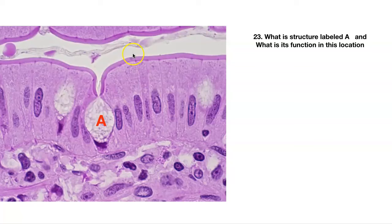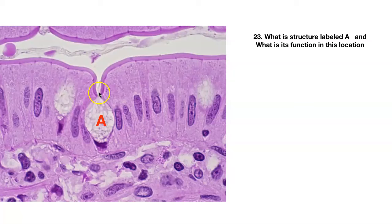Number twenty-three — what is structure labeled A? This is a goblet cell. What kind of epithelium is this? Simple columnar. You can actually see the microvilli edging up here, and here's your lumen. What's the function of goblet cells here? They're making mucus — probably in the small intestines. It's partly to lube the tube: there's food being digested and absorbed, so the mucus keeps food moving down the tube, and it also provides a mucusy protection for these cells.